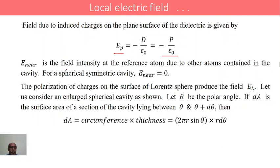Now, the third quantity: the field at the atom due to the nearby surrounding atoms, Enear, will be equal to 0 because of the spherical symmetry of the cavity. Because of the spherical symmetry, Enear becomes equal to 0.